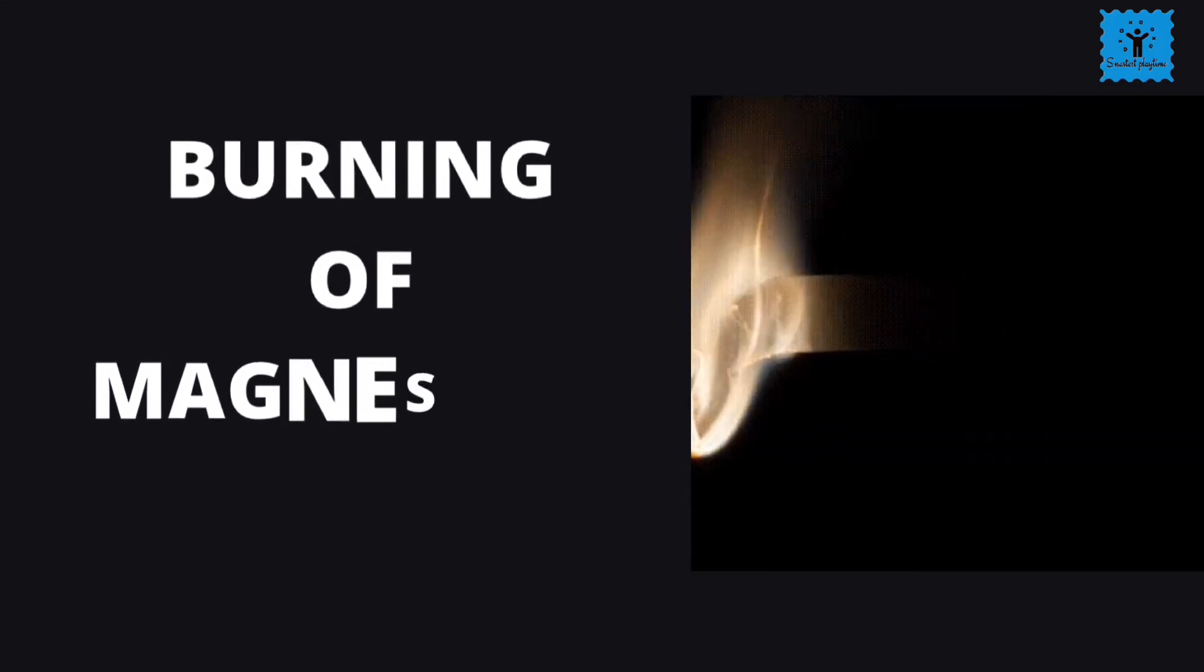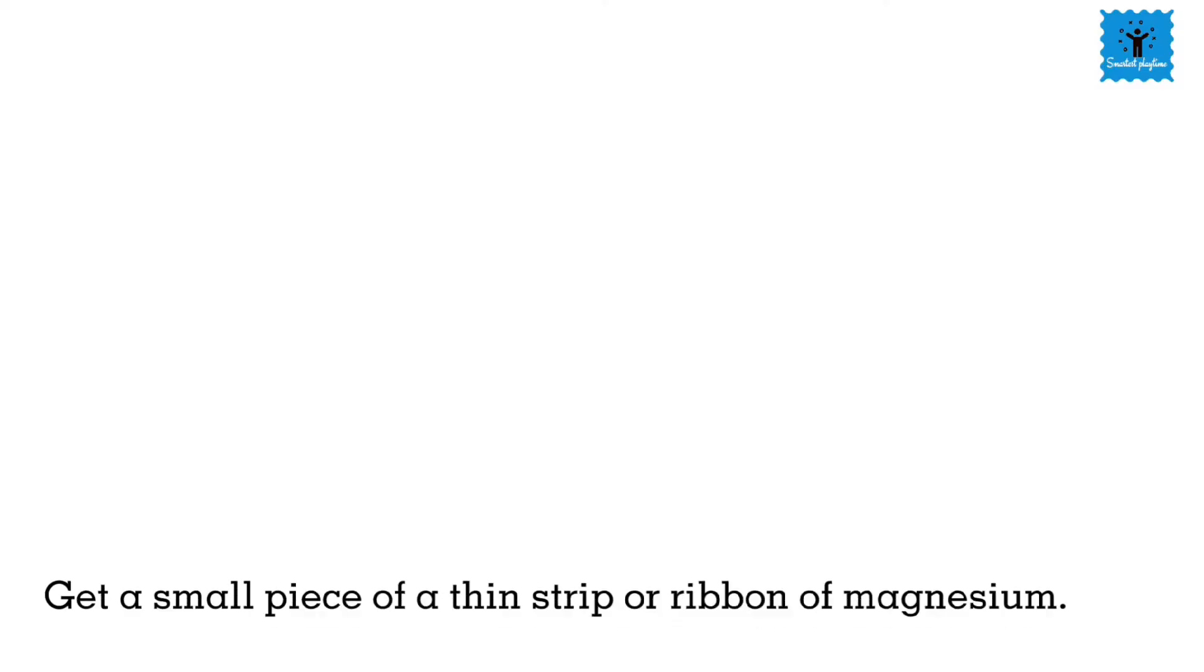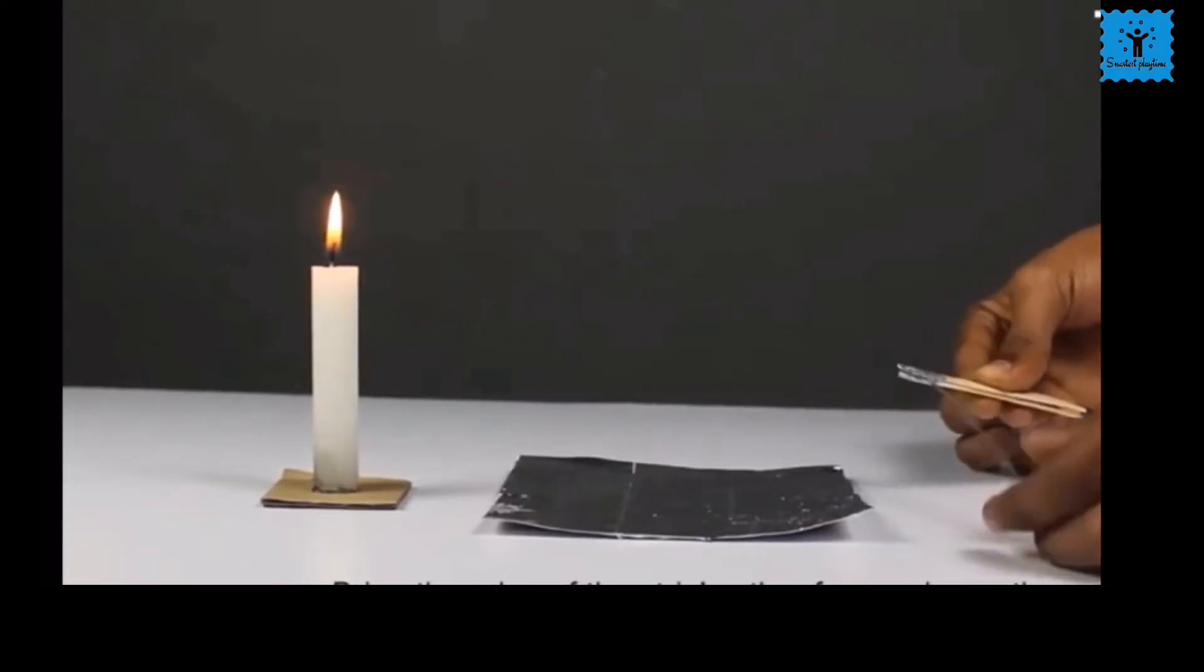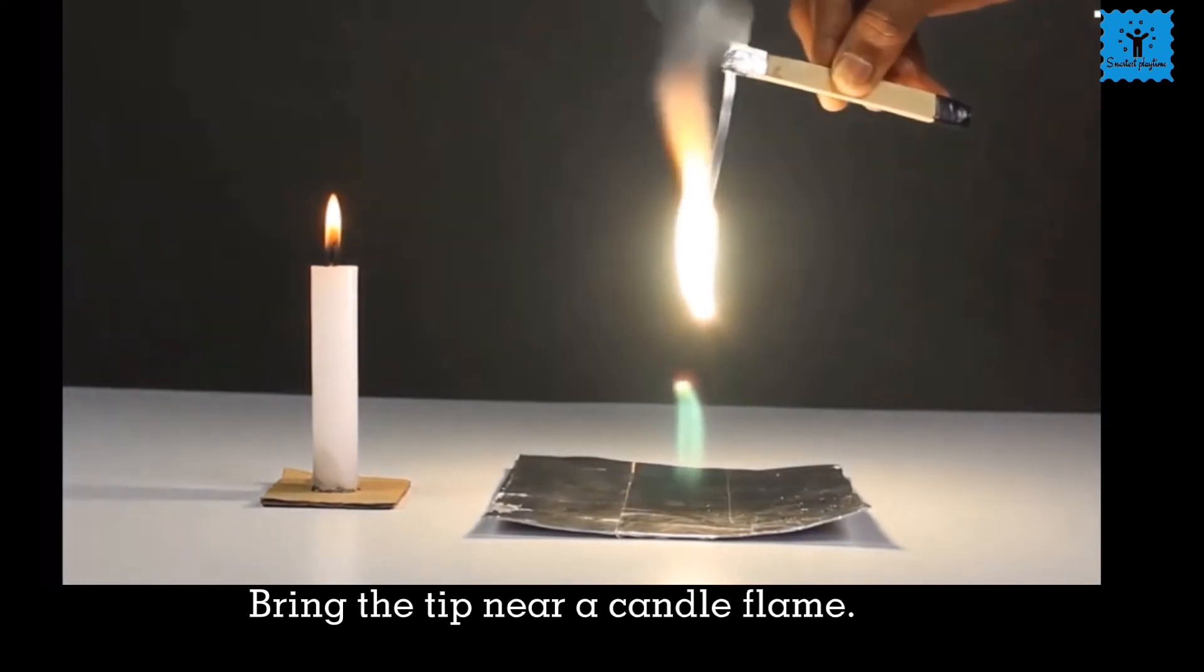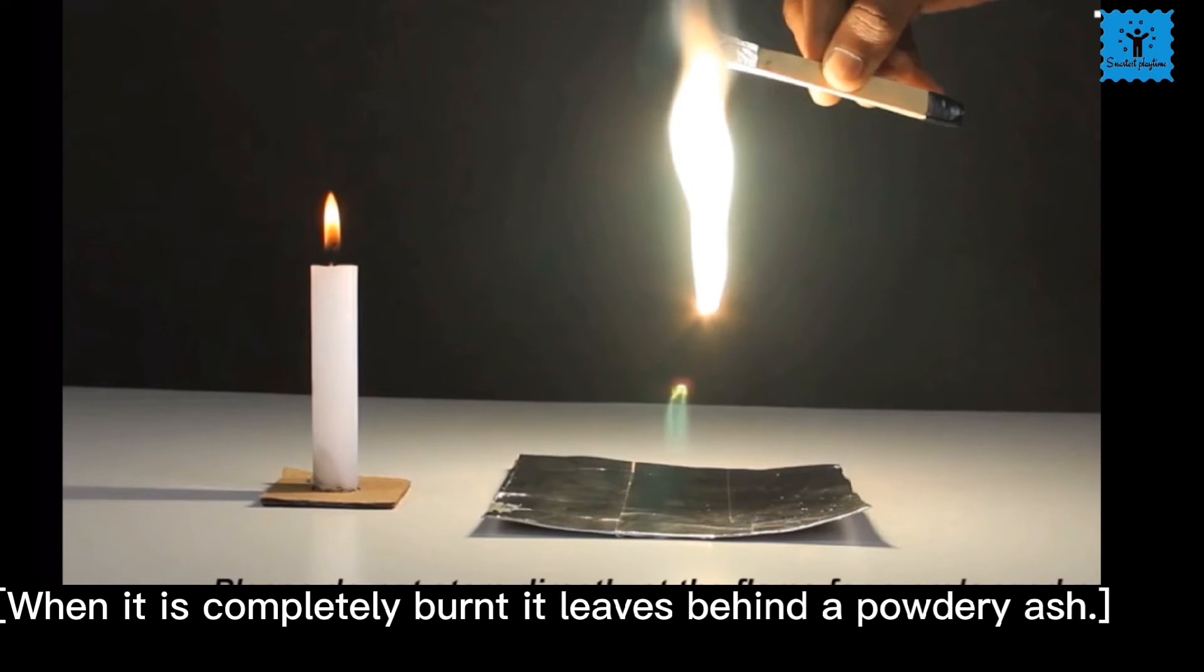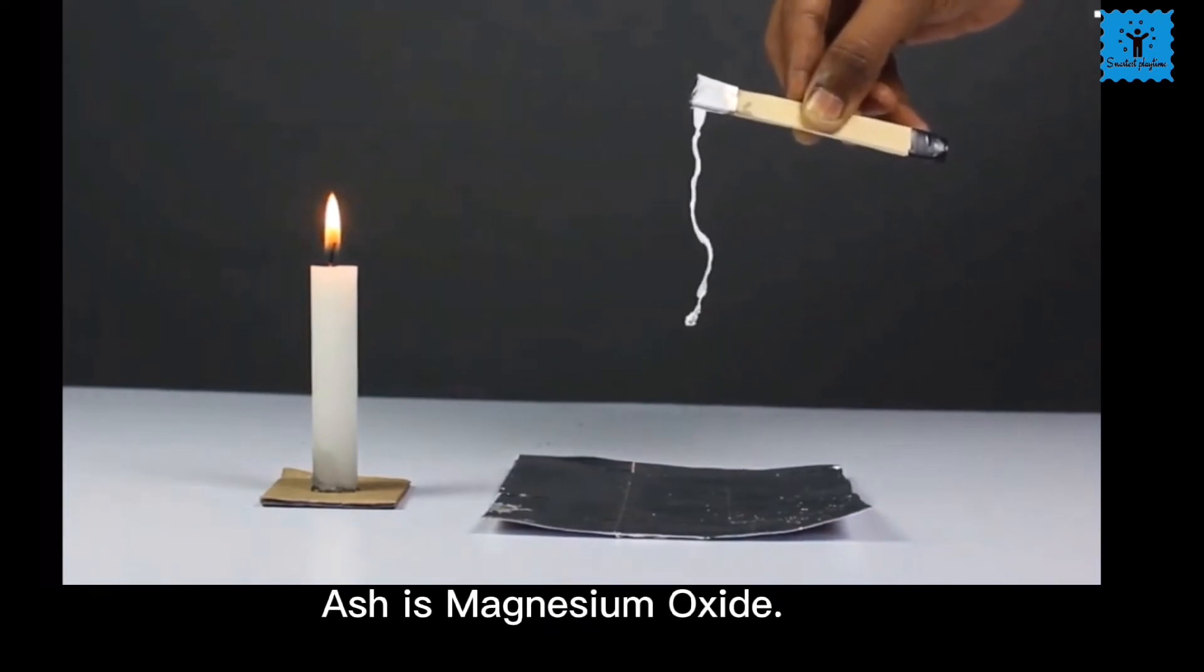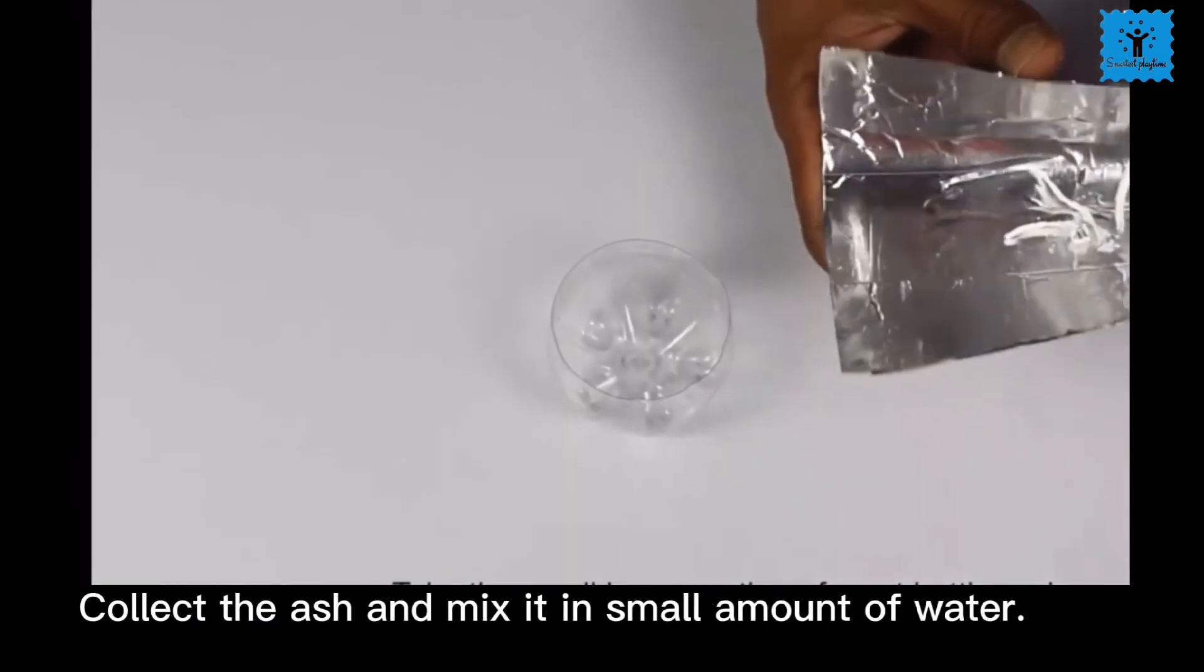Another example of chemical change is burning of magnesium ribbon. Take a thin strip of magnesium. Clean its tip with sandpaper. Now bring the tip near a candle flame. You will observe that it burns with a brilliant white light. When it is completely burnt, it leaves behind a powdery ash. This ash is totally different from the magnesium ribbon. This ash is actually magnesium oxide, which is a new substance. In this chemical change, heat and light is released.